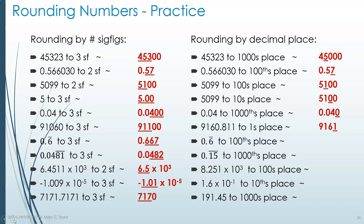0.6 repeating to the hundredths place. We know the digits are 0.66..., so the hundredths place is filled by the second 6. The digit after that is another 6, telling us to round that second 6 up. So the answer is 0.67. Our number is close to 0.66666... repeating, and the last significant digit is in the hundredths place.